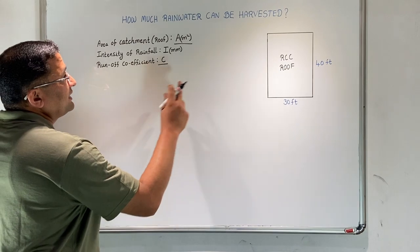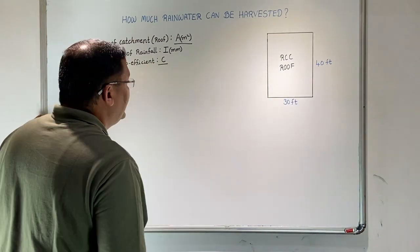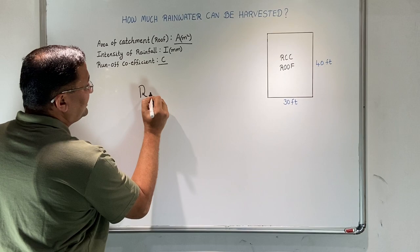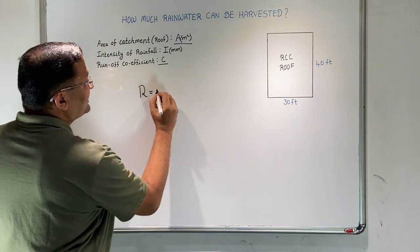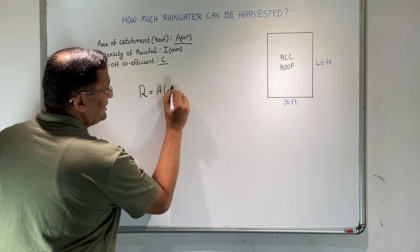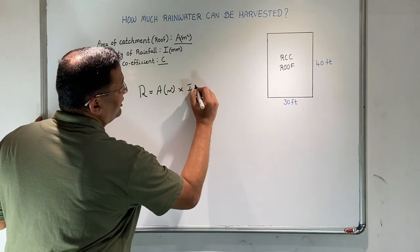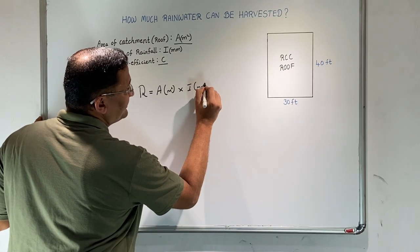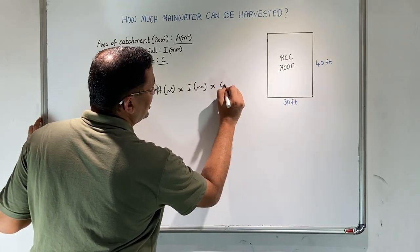The runoff from a given catchment is given by the equation: runoff R equals catchment area A in meter square multiplied by intensity of rainfall in millimeter times the runoff coefficient C.